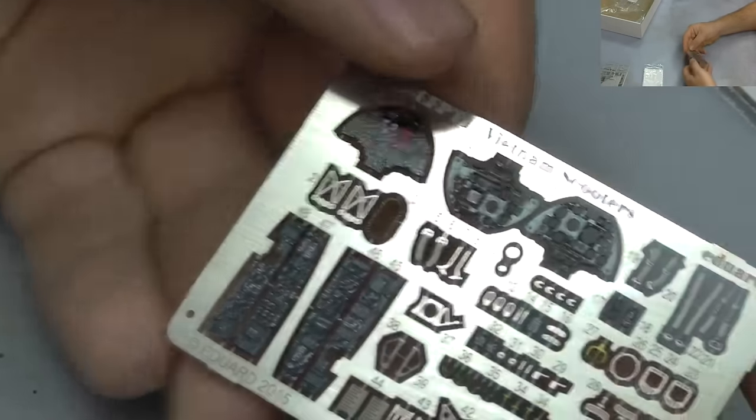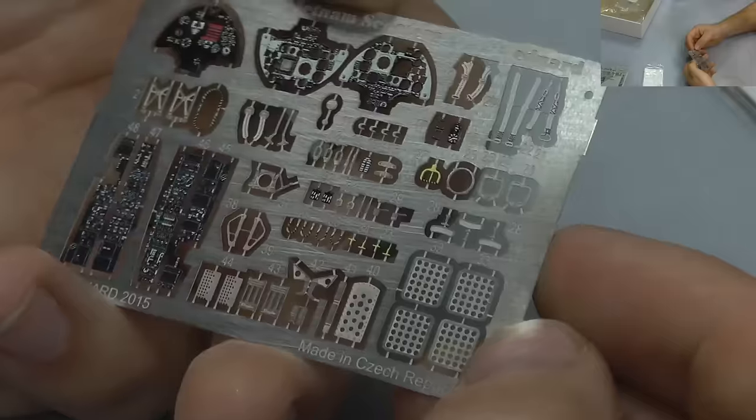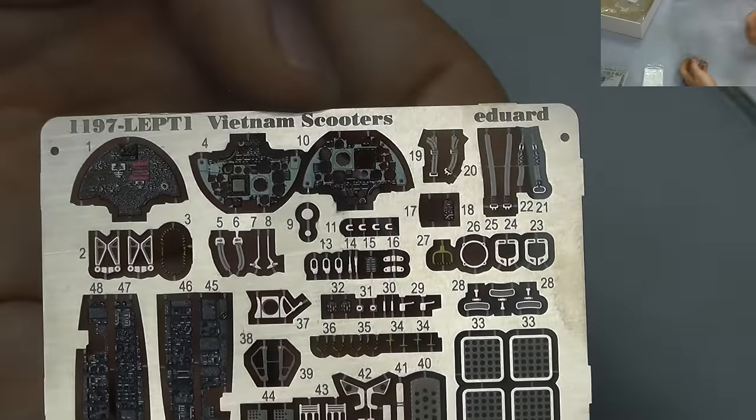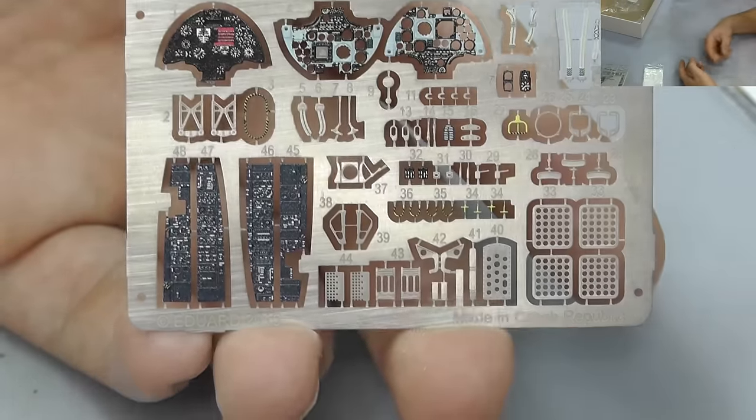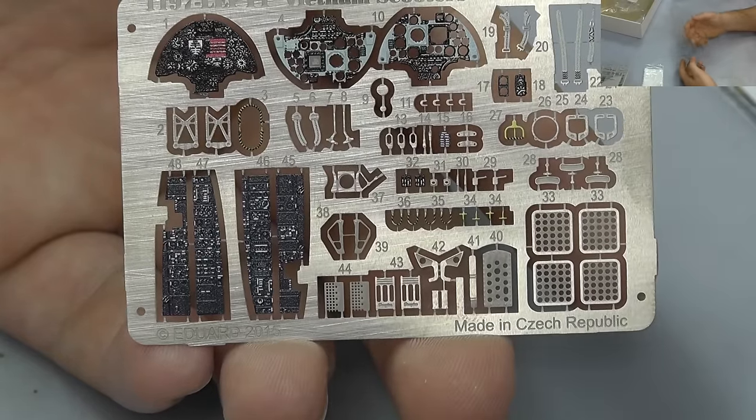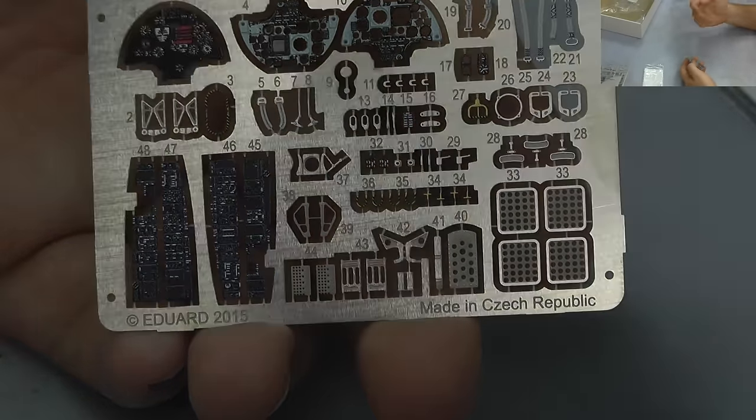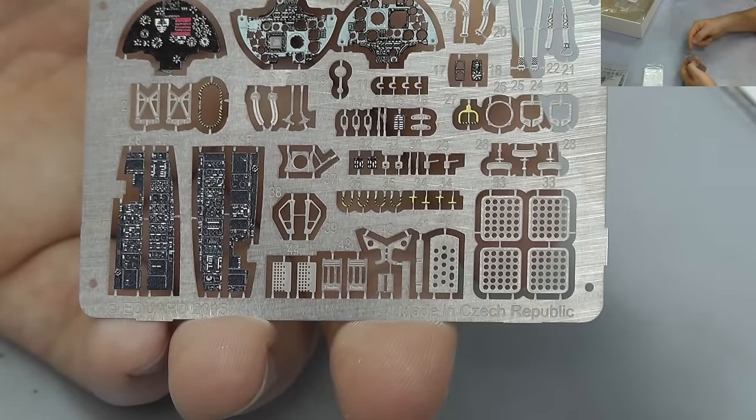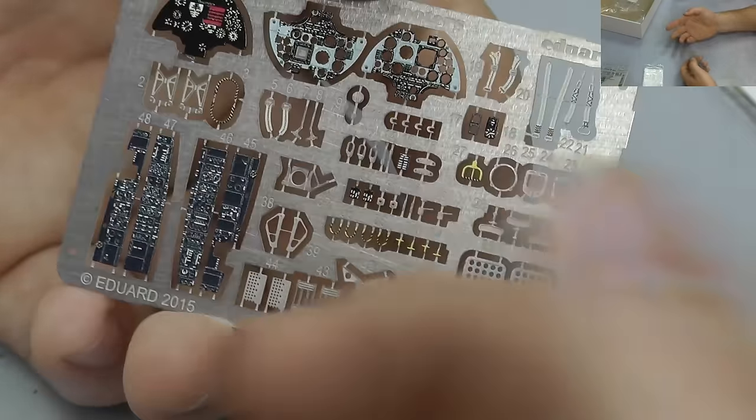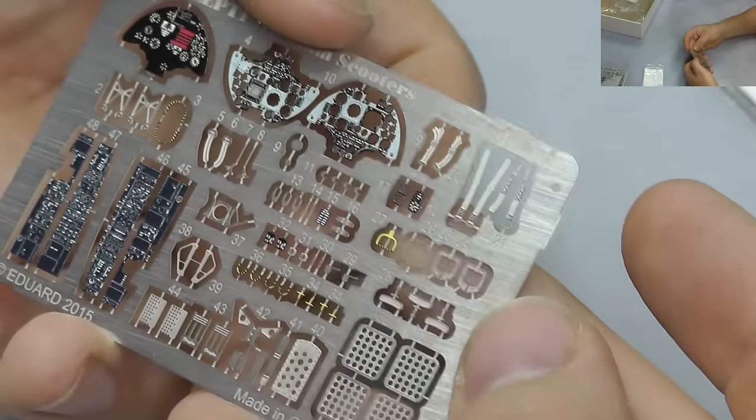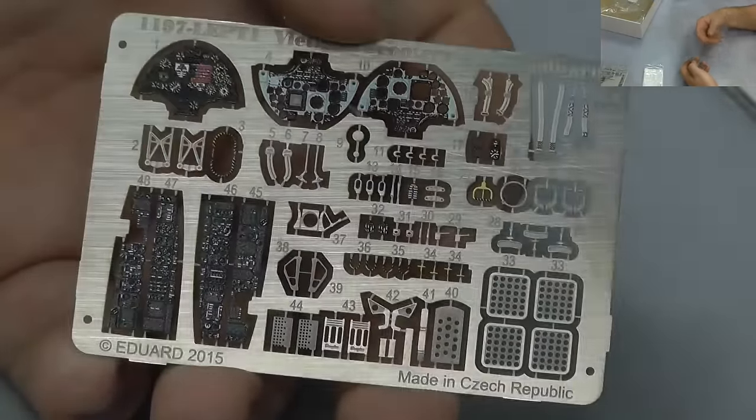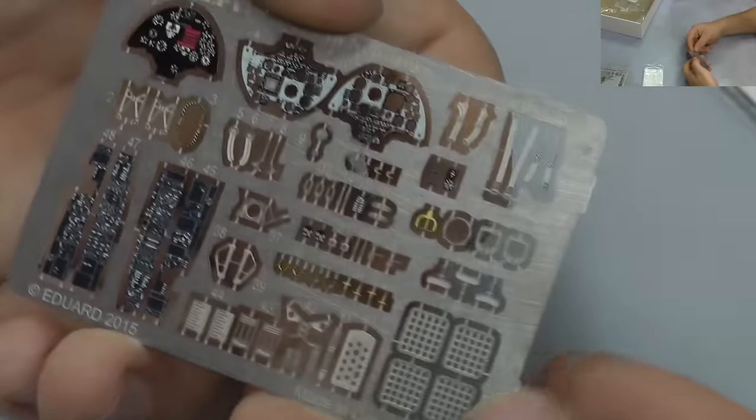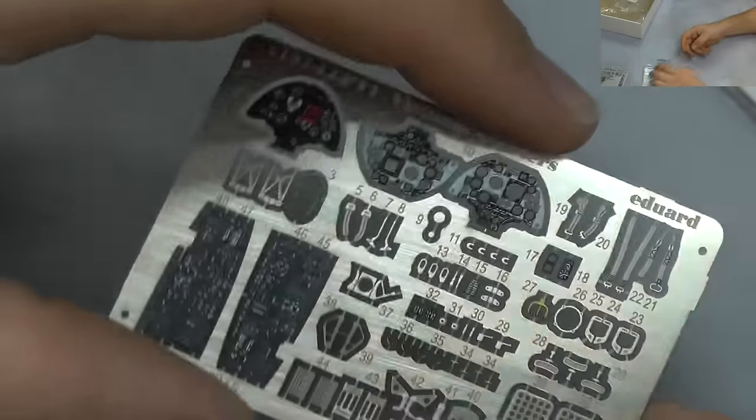Then you get what Eduard puts in absolutely all their kits pretty much these days - a nice bit of photo etch which is all pre-painted and everything. We've got instrument display panels and all sorts of things. You've got the chaff and flare dispensers there. You've got seat belts going on there. There's also lots of little bits that go on the landing gear and bits here, bits there.